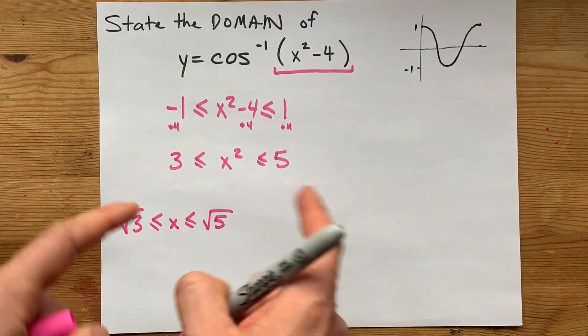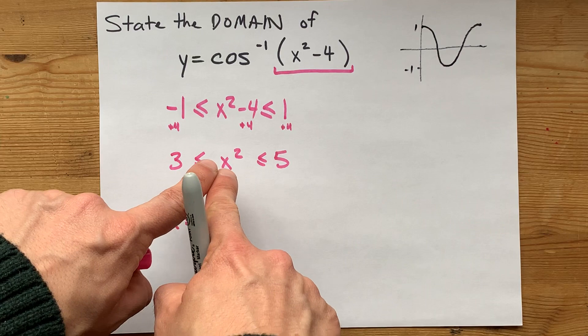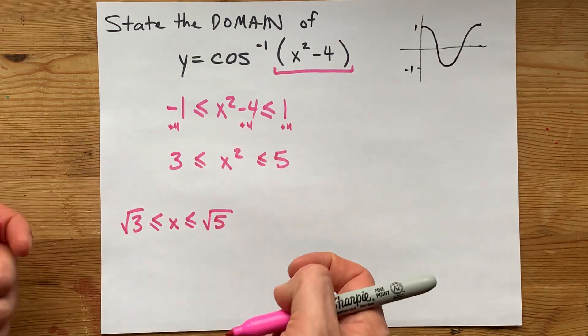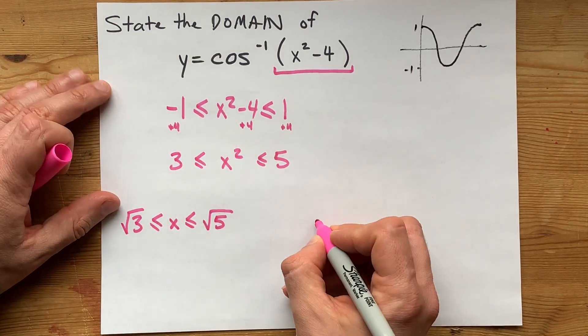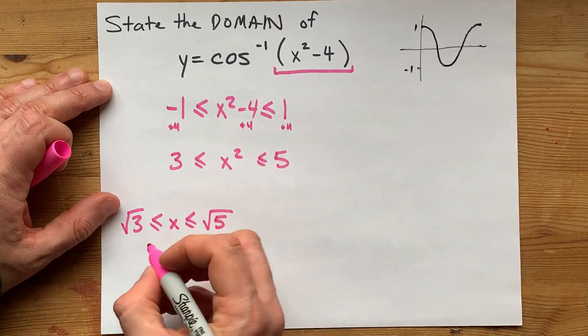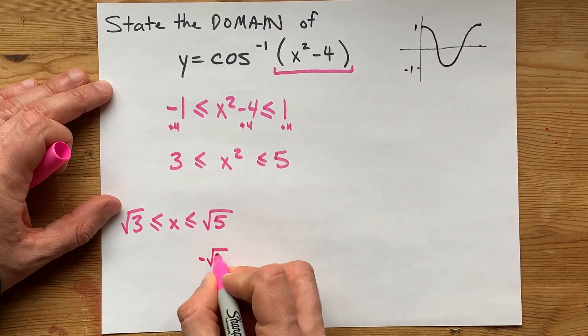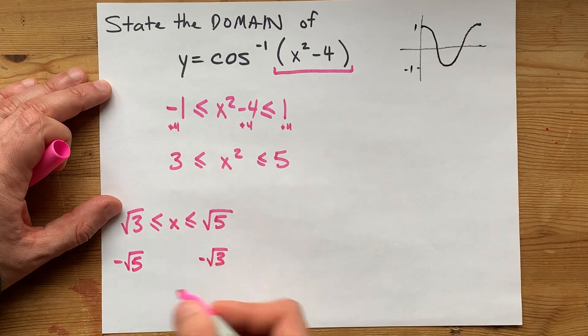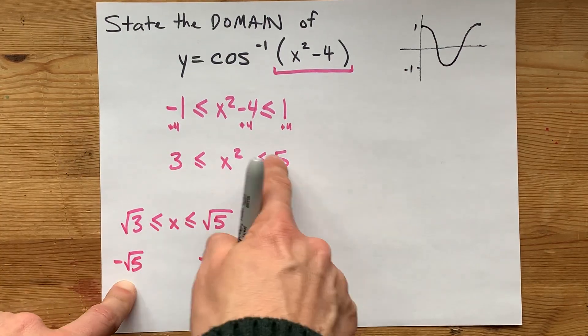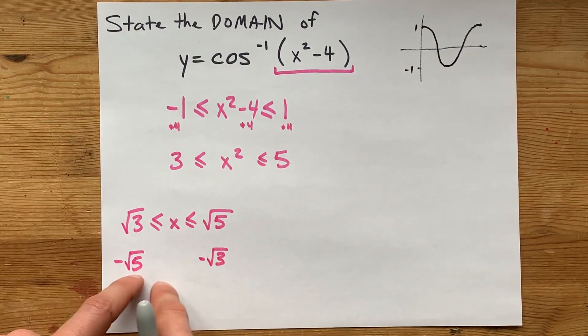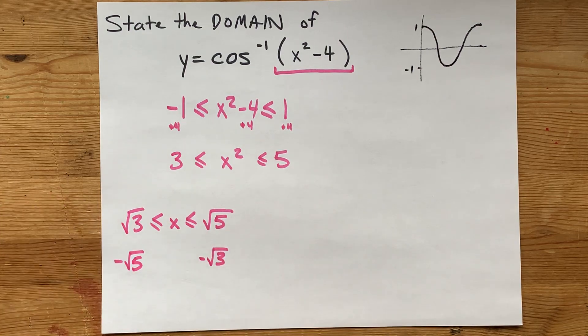But aren't there some negative numbers that you can square to get positive numbers? Yes, there are. Negative root 3 and negative root 5 are both squarable to get both 3 and 5. And so anything in between the two is also allowed, probably.